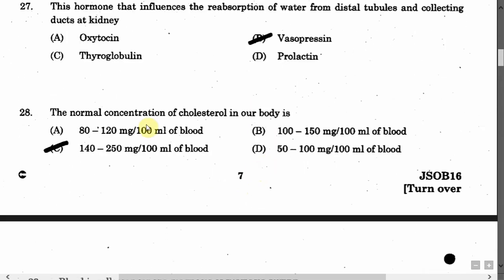The next question is: The normal concentration of cholesterol in our body is — Option A: 80 to 120 mg per 100 ml of blood. Option B: 100 to 150. Option C: 140 to 250. Option D: 50 to 100. The correct answer is Option C, that is 140 to 250 mg per 100 ml of blood.